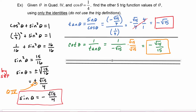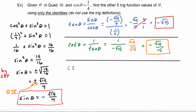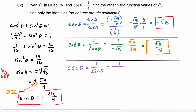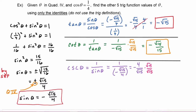Next we can find cosecant theta using the reciprocal identity: cosecant theta equals one over sine of theta. Since sine of theta is negative radical fifteen over four, this becomes negative four over radical fifteen. After rationalizing, we get negative four radical fifteen over fifteen.